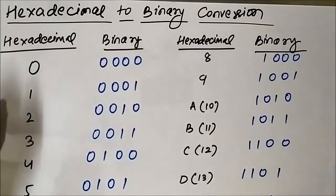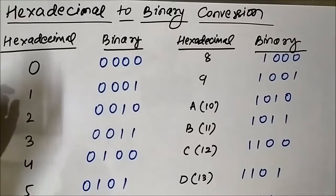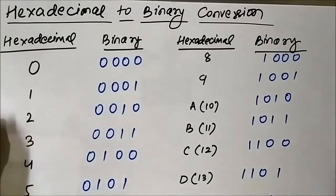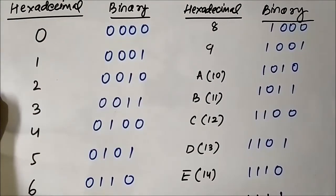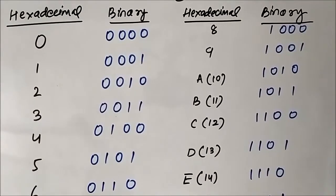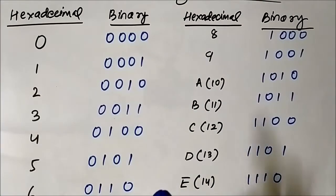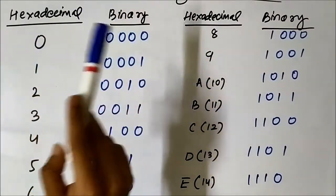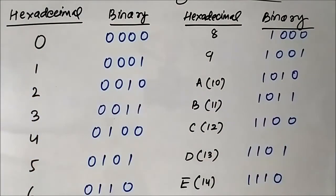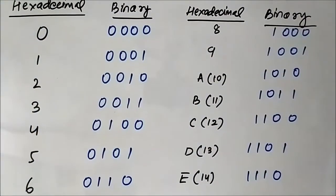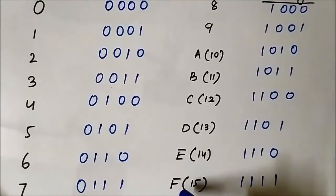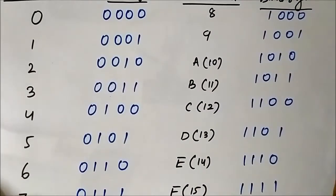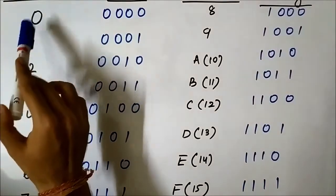Now we know that a total of 16 symbols are allowed in the hexadecimal number system, from 0 to F. In one column we have noted down the digits or symbols of the hexadecimal number system, and in another column we have represented the binary representation of that symbol. In the hexadecimal column we have all the hexadecimal symbols from 0 to F, that is 15.